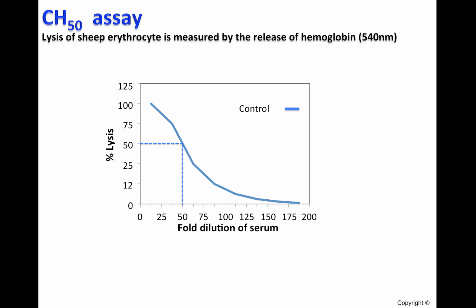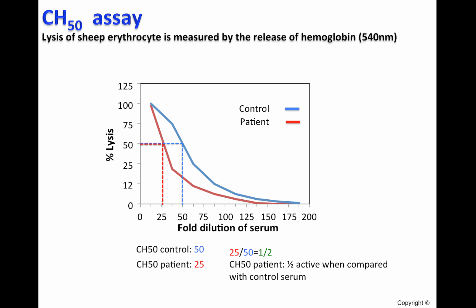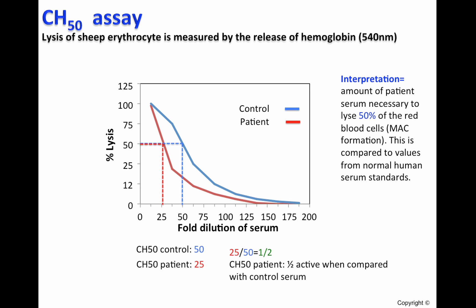A patient sample is compared with this control or standard. In this example, we can observe that 50% lysis is observed when the serum is diluted only 25 times, which means that the patient's serum has a deficiency of complement components of the classical pathway — the patient's serum is half as active when compared with the control. The reduction of CH50 in this patient may be due to the reduction of certain complement components of the classical pathway, malfunction, or certain autoimmune diseases such as systemic lupus erythematosus, which is covered in another video.